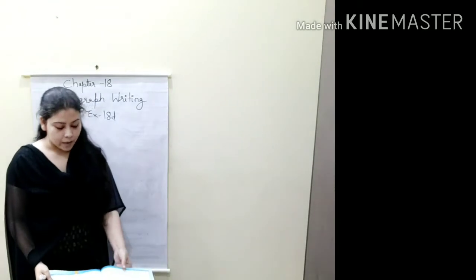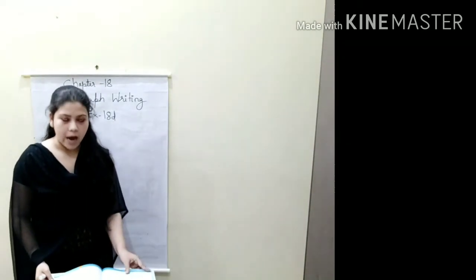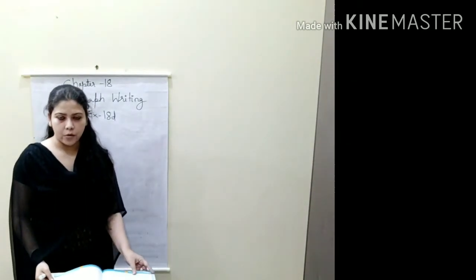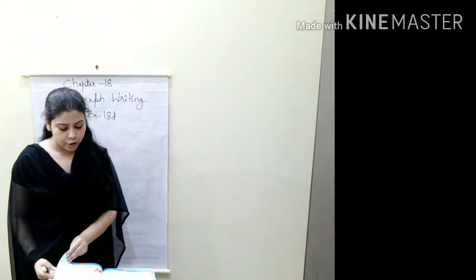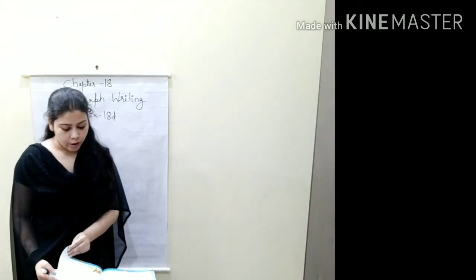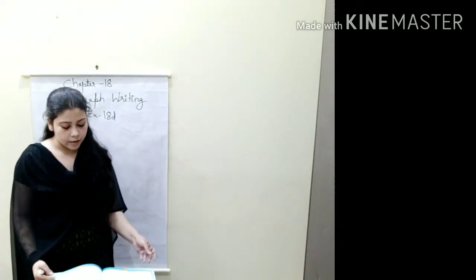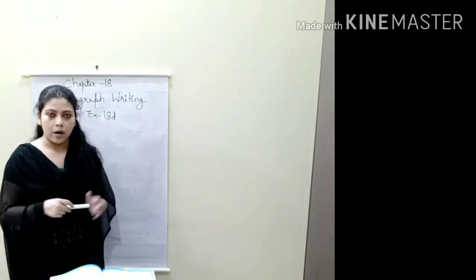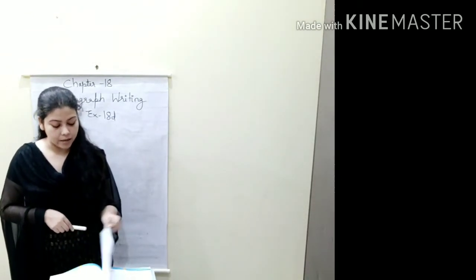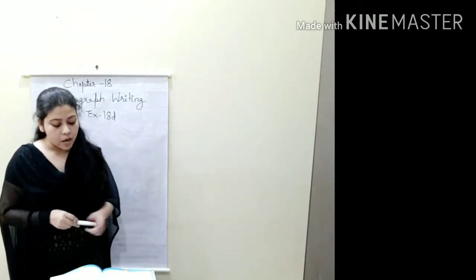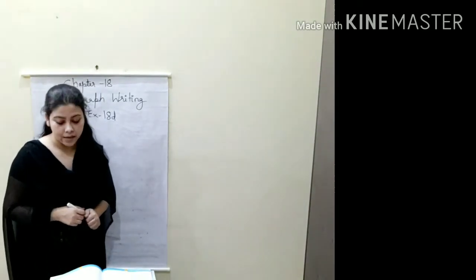So can we start, children? I hope you have done the previous exercises. I have checked only one and two copies in which you have written about camel. Please do all the exercises — the previous exercises — that is 'my hobbies' and 'a tiger.' So let's start today's exercise.